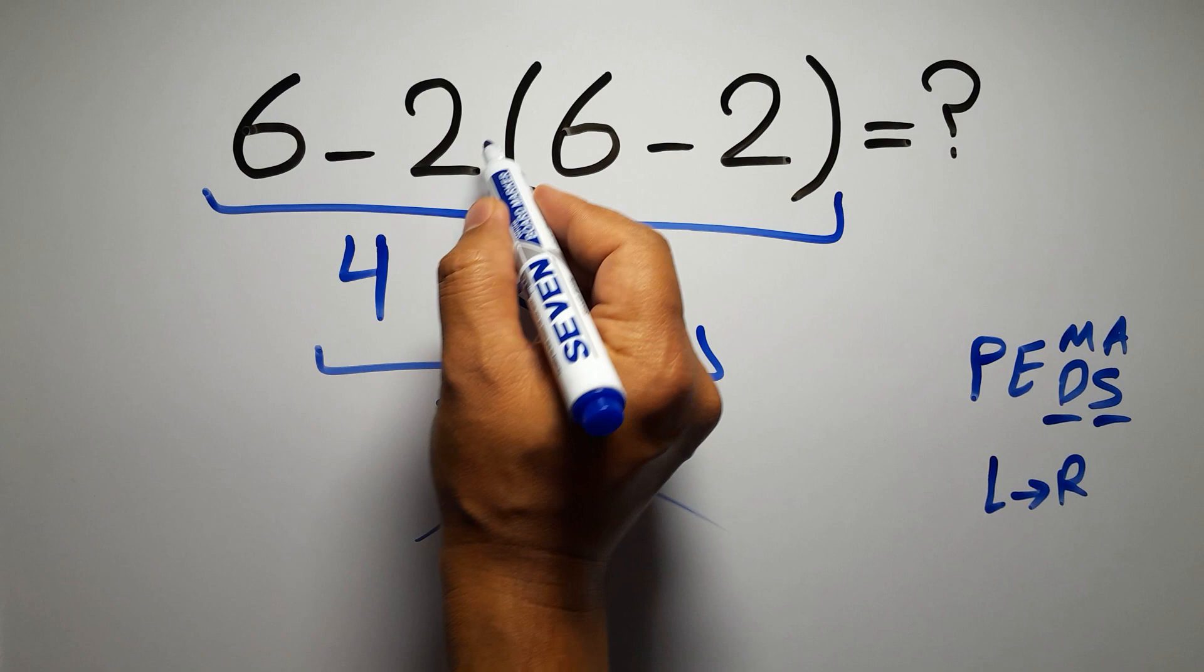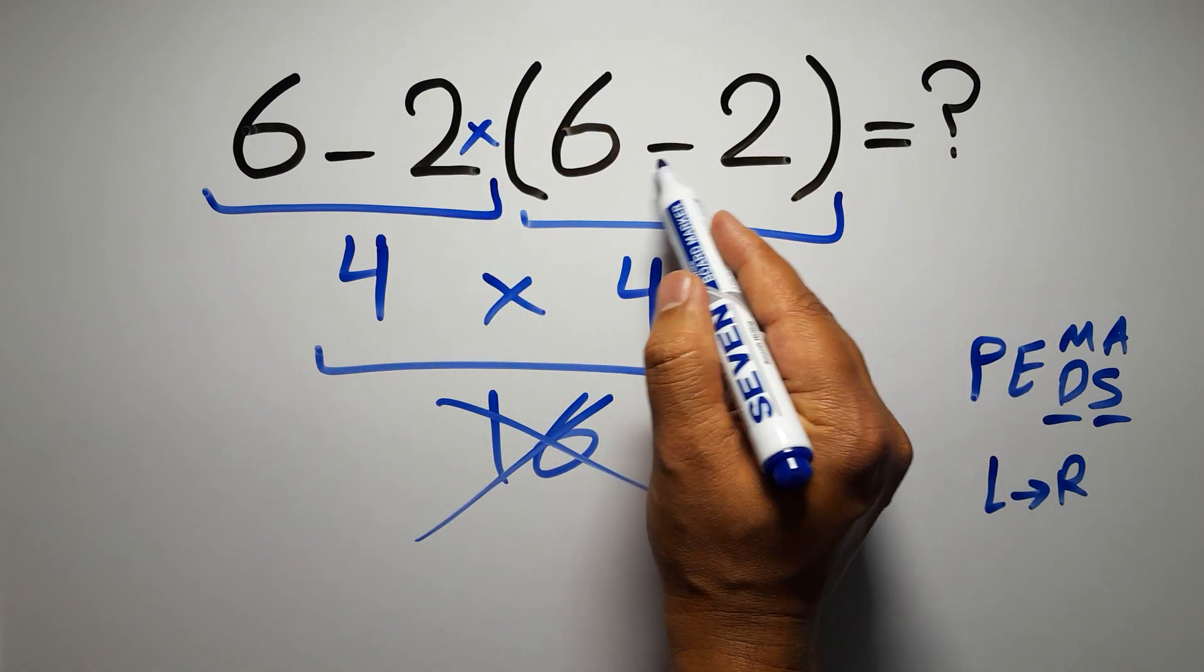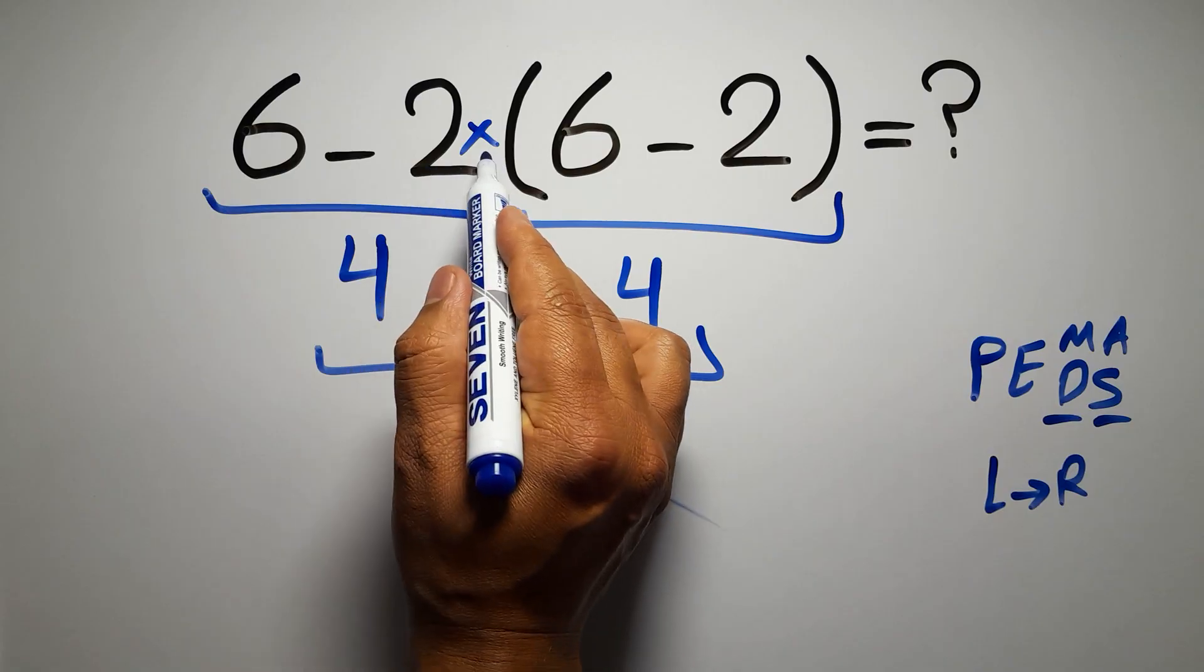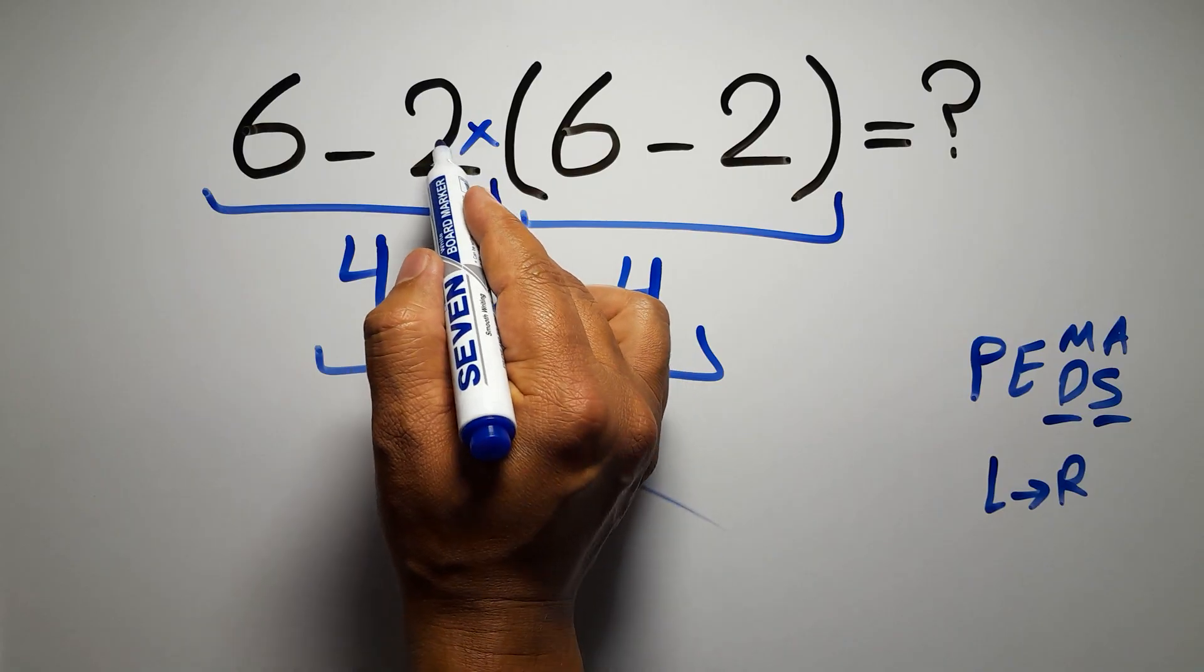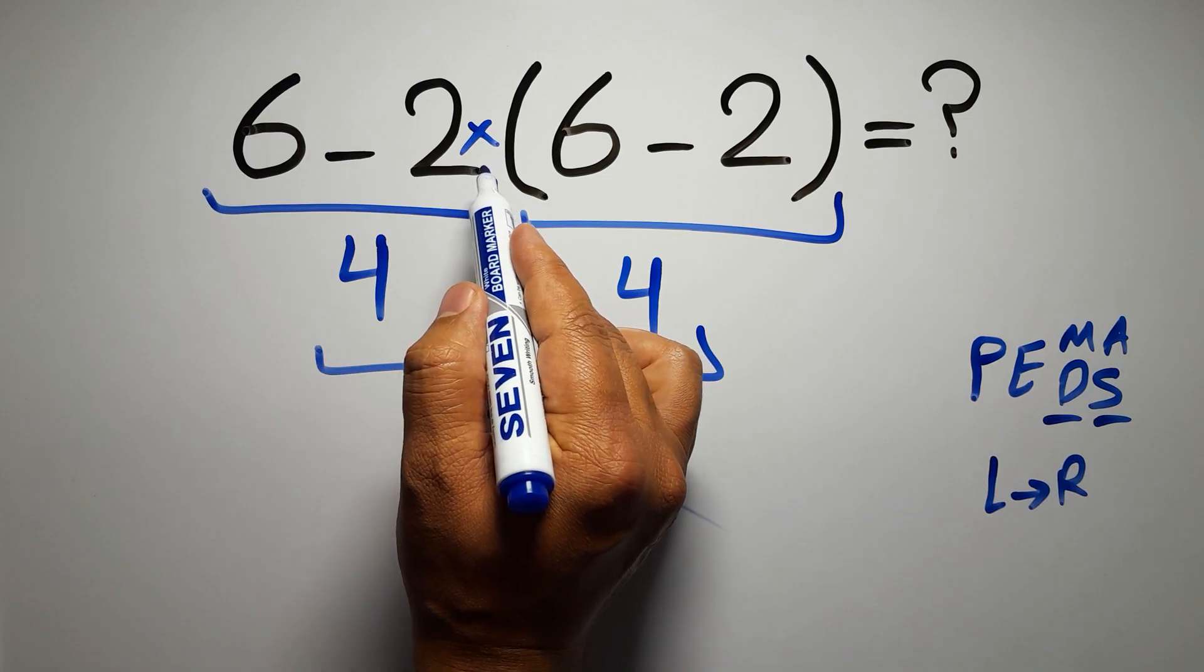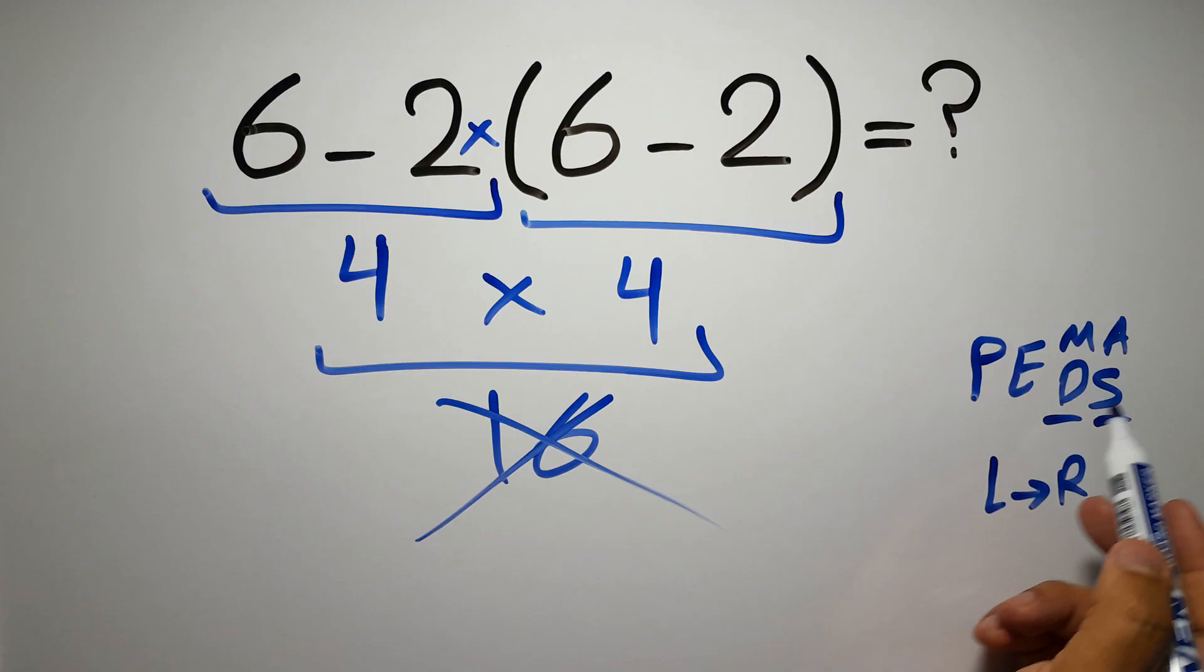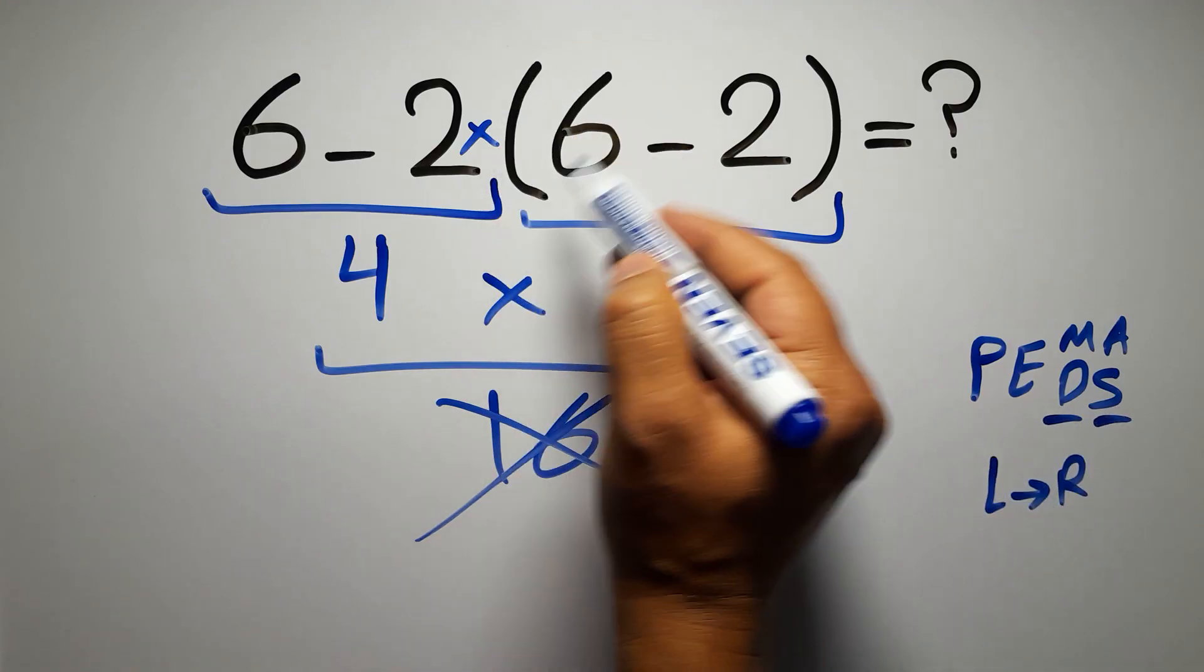In this expression we have one subtraction, one multiplication, and one parentheses. Inside these parentheses we have one subtraction. Here we have a multiplication because in mathematics when a number is placed next to parentheses it means multiplication, and we usually don't write the multiplication sign for brevity.